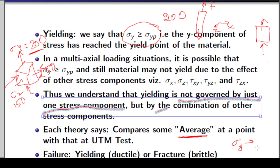So it is not just enough to measure sigma y and decide whether yielding has occurred. Theories of failure say you must measure all six stress components and take some kind of average. That calculated average will determine whether the component has yielded or not. When we want to use the results of a simple tensile test for cases where loads are not uniaxial but multiaxial, we must use theories of failure.